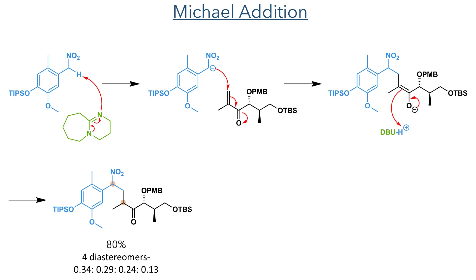With the enone now formed, they could carry out a Michael addition to link the two fragments together. Fragment 1 is firstly deprotonated by DBU and the resulting anion undergoes Michael addition into the enone, forming the new carbon-carbon bond in an 80% yield.